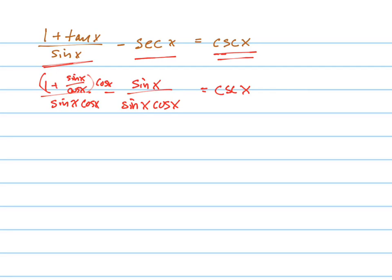So now I multiply the cosine in and I get what? Cosine x plus sine x minus sine x. All over sine x cosine x.